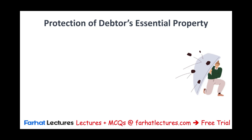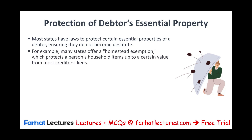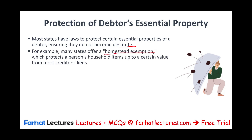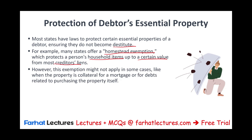Protection of debtors' essential property: in most states, state laws protect certain essential properties of the debtor, ensuring they don't become destitute. They don't want the creditor to take everything — the property, the home — so there are limits on certain assets. They don't want the debtor to become homeless and become a state problem. For example, many states offer a homestead exemption which protects a person's household items up to a certain value from most creditors' liens. Those are state laws and they differ from state to state. However, this exemption does not apply when the property itself is the collateral for the mortgage — in that case they will take the property.